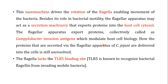One important feature of the flagella of Campylobacter jejuni is that it lacks the TLR5 binding site. This TLR5 binding site is known to recognize bacterium flagellin from invading motile bacteria — it is a binding site for immune cells, specifically T cells, to bind to the bacteria. If the flagella of Campylobacter lacks this TLR5 binding site, it means the human immune system will not be able to recognize the flagella of this particular bacterium.